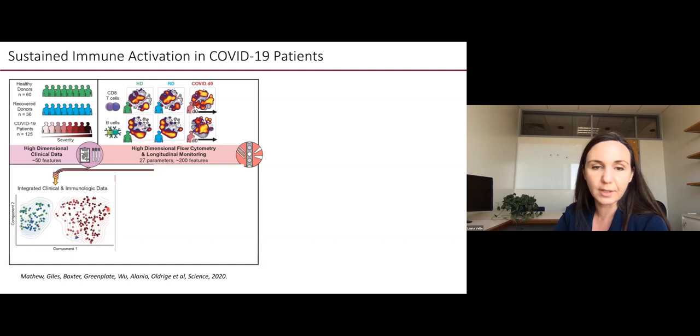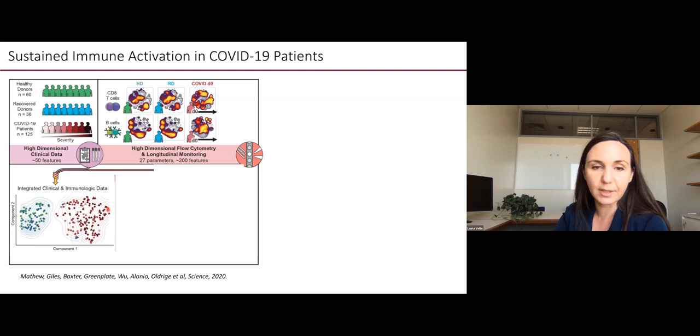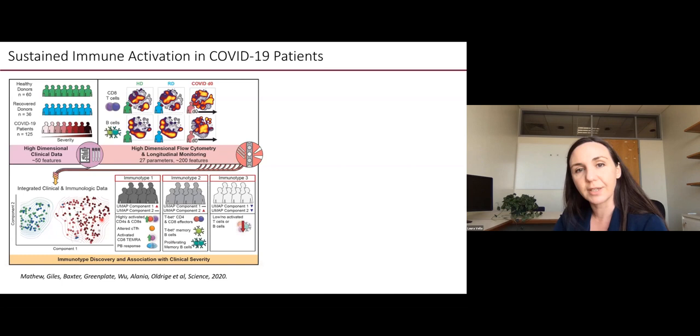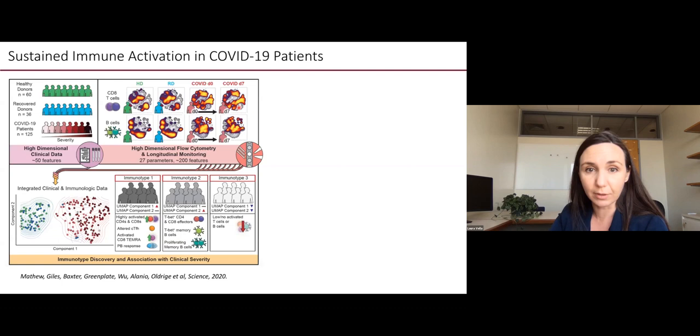When we look instead on a patient-by-patient basis using UMAP for dimensionality reduction, taking those 200 flow cytometric features, you can see that by and large, the healthy and recovered donors cluster together, and subjects with acute illness cluster together, and then the severity increased as you moved here along component one. This paper was published in June in Science by the large group of us who were working on this.